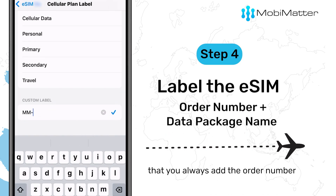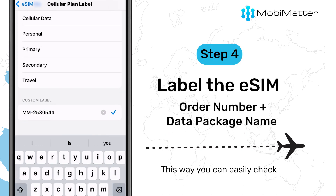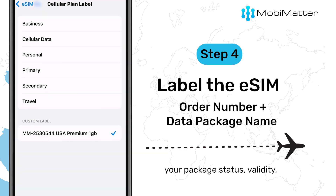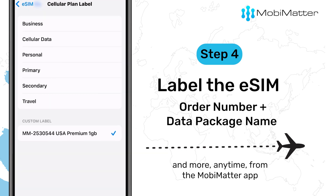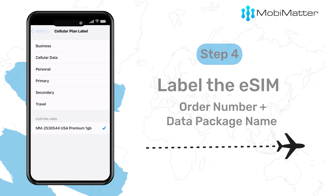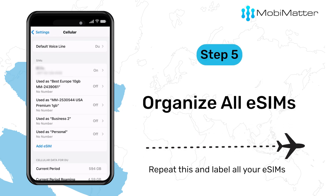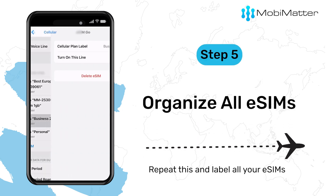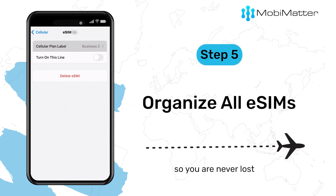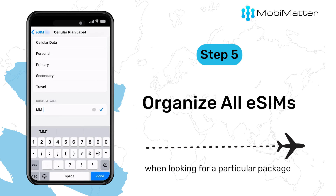We'd recommend that you always add the order number to your eSIM label. This way, you can easily check your package status, validity, and more anytime from the MobiMatter app. Repeat this and label all your eSIMs so you are never lost when looking for a particular package.